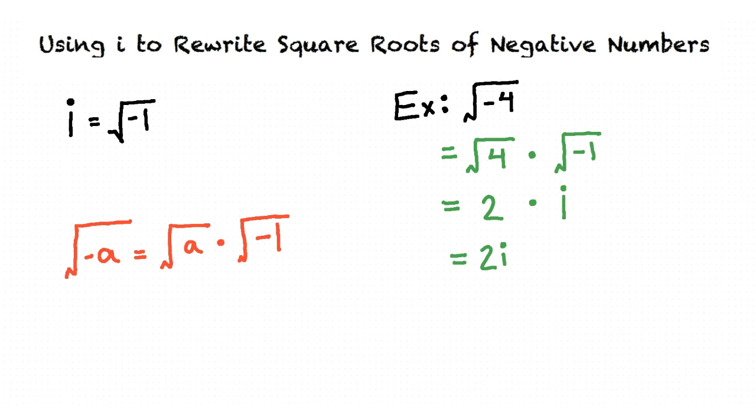What if there's a square root of a number that's not a perfect square and is also negative? If there is not a perfect square, we use the same rule to rewrite it using factors that are perfect squares. Consider the following example.